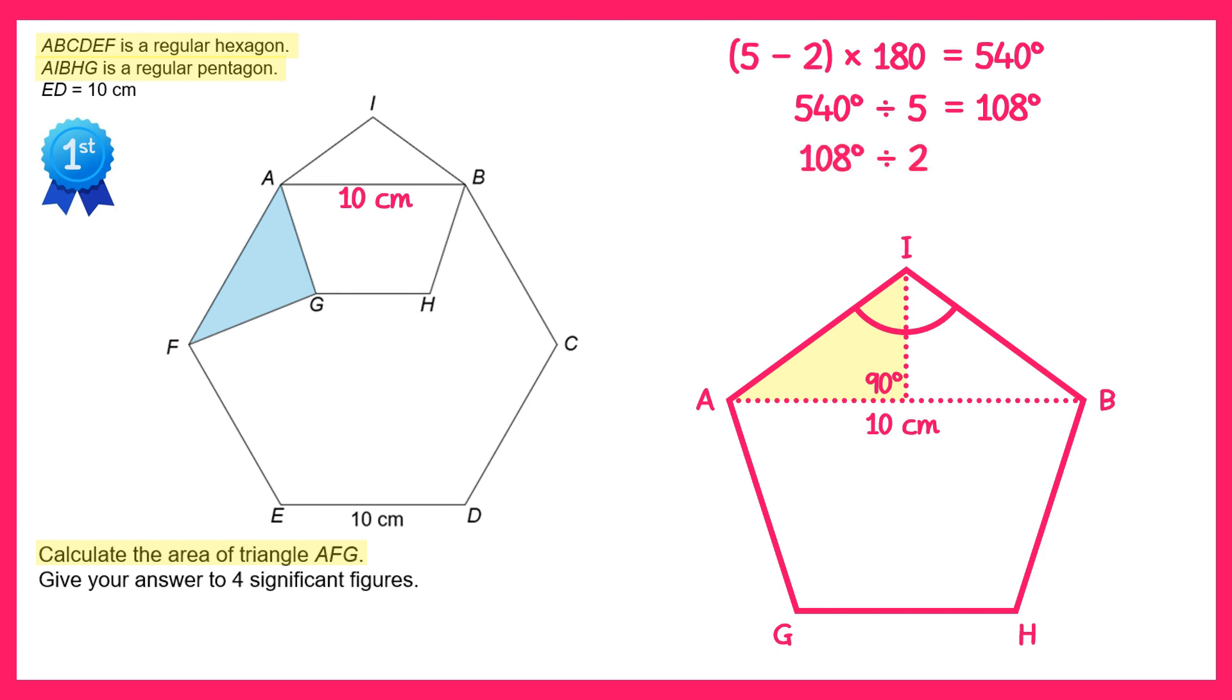Now if I divide 108 by 2, I'll find out the size of the angle at the top of my triangle. So that one's 54 degrees. I can find out the other angle in this triangle by doing 180 take away 90 take away 54, so that's 36 degrees in here.